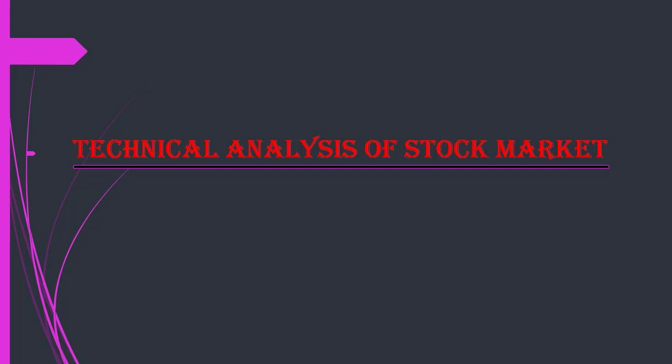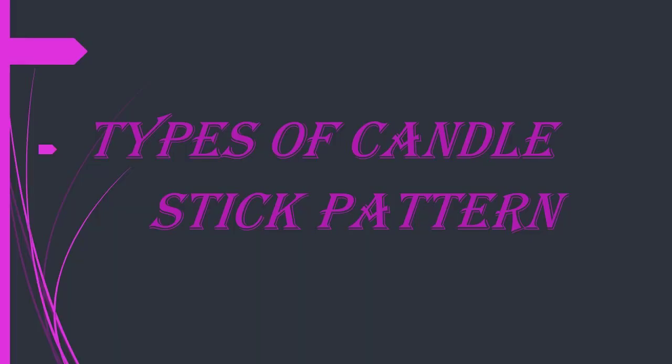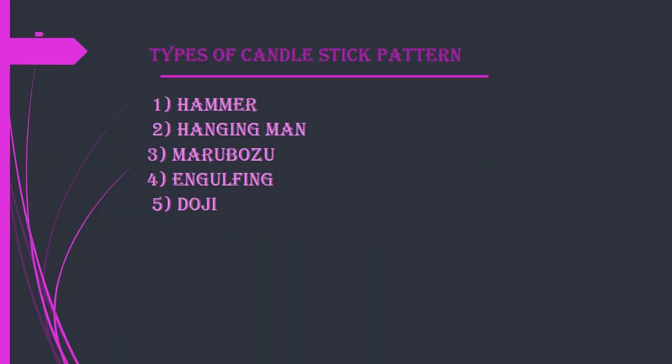If you want to learn the technical analysis of the stock market, you need to learn the types of candlestick patterns. There are five major types: the first is hammer, second is hanging man, third is marubozu, fourth is engulfing, and fifth is doji.